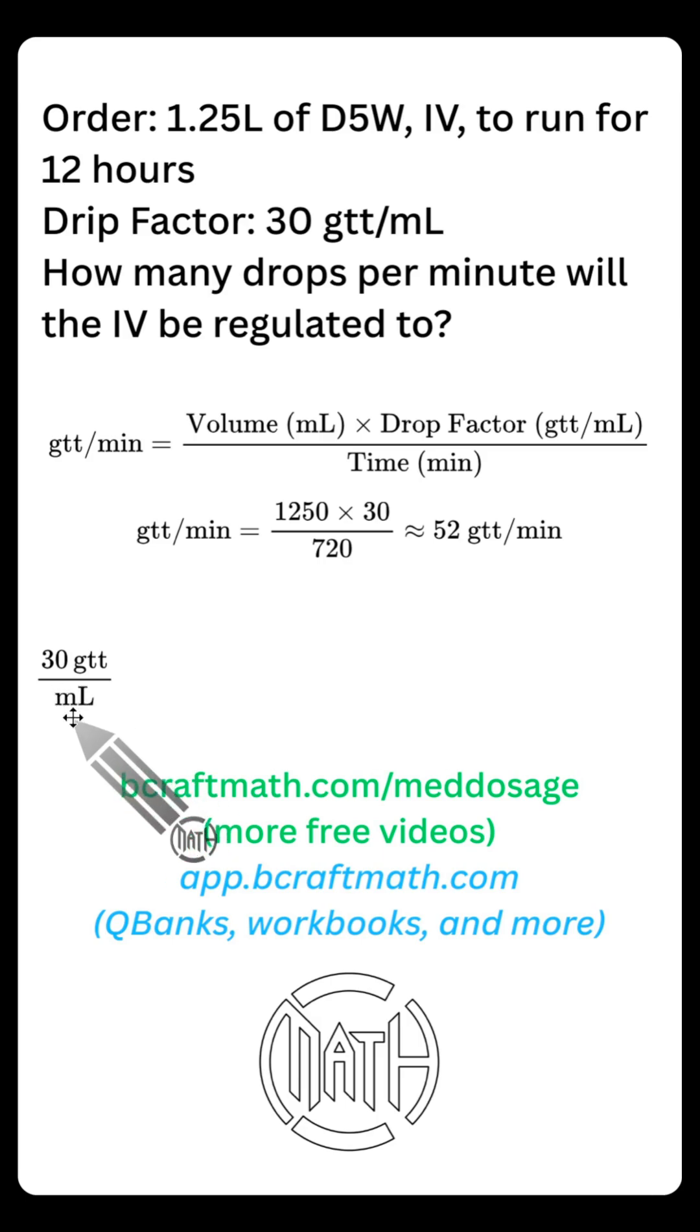We need to get rid of milliliters because we ultimately need minutes, drops per minute. Let's get rid of milliliters. And I mentioned earlier, this was not in milliliters, but in dimensional analysis, we can tie in that conversion. 1000 milliliters is equal to one liter. This allows you to cross out the milliliters.